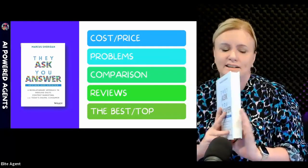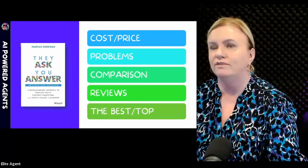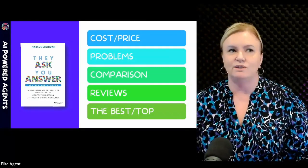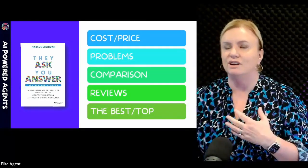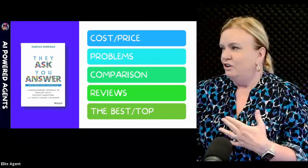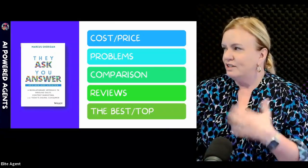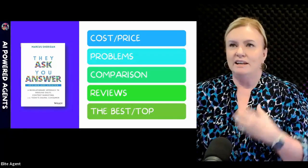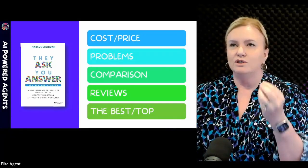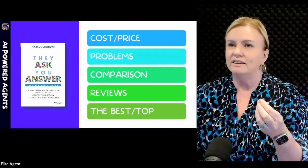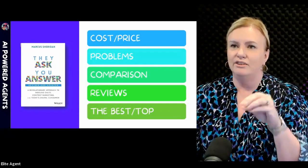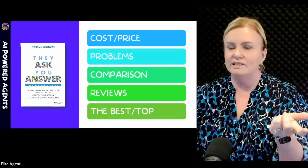In Transform over the years we've looked at various parts of They Ask You Answer and the Big Five — what are the questions that consumers are asking? The just-listed, just-sold things — yes, I think you need them for social proof, but they're not really the things that consumers are interested in if they're not in real estate mode.